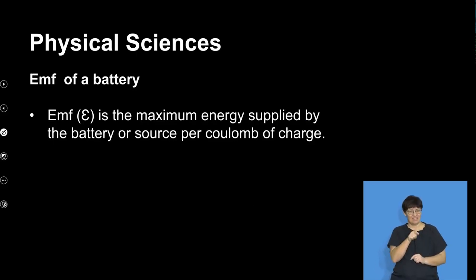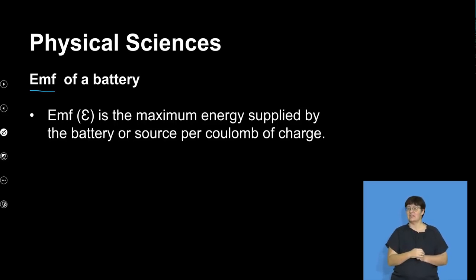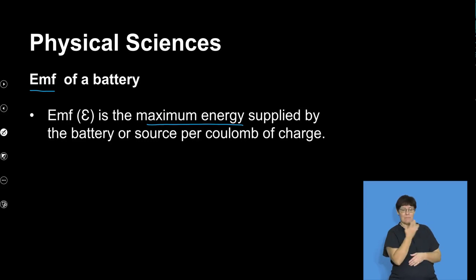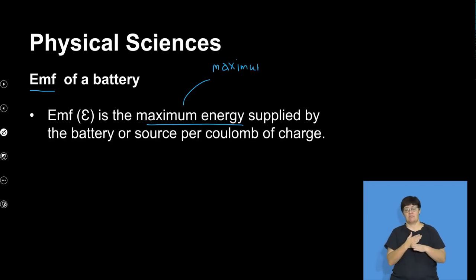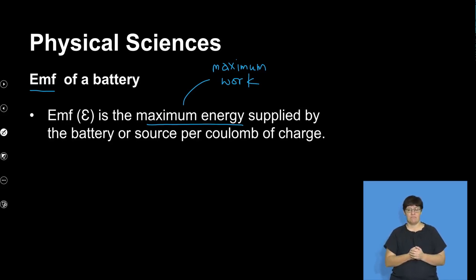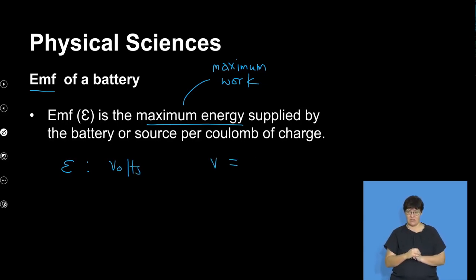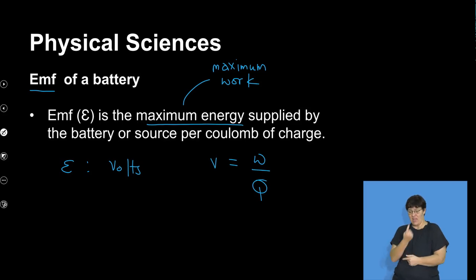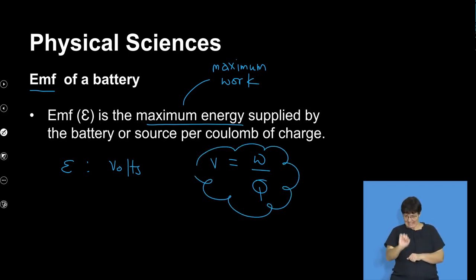We are now able to arrive at what exactly EMF is. EMF, by definition — the symbol is E — is the maximum energy supplied by the battery or the source per coulomb of charge. When we talk about maximum energy, we can also say maximum work. EMF is measured in volts, since V equals W over Q. So the maximum energy that a battery can supply for every coulomb of charge is our EMF. EMF is some form of voltage or potential difference across the battery.